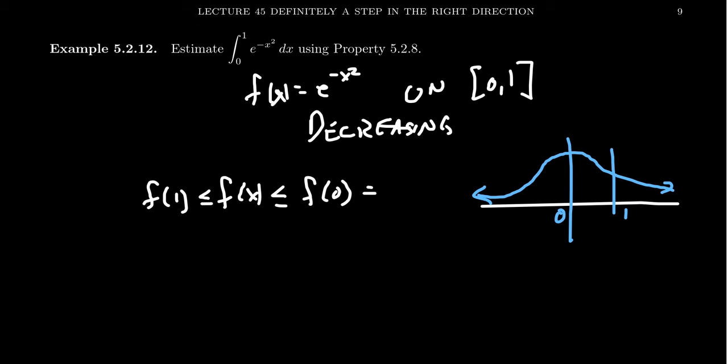And so we can do these calculations. f of 0, if we plug 0 into the function, we get e to the 0, which equals 1. On the other side, we're going to end up with e to the negative 1 squared. And so this ends up with just 1 over e as our bounds.